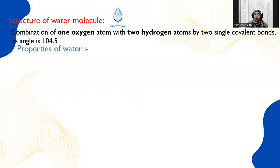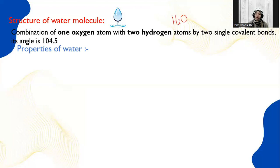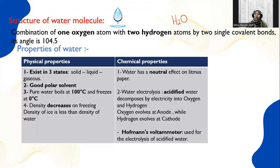Lesson four is about water. The chemical structure of water is H₂O — one oxygen atom and two hydrogen atoms combined by a single covalent bond. The angle between hydrogen and oxygen is 104.5 degrees. Physical properties of water: it exists in three states — solid, liquid, and gas. It is a good polar solvent, dissolving most ionic compounds like sodium chloride and covalent compounds like sugar. It can form hydrogen bonds with other molecules.